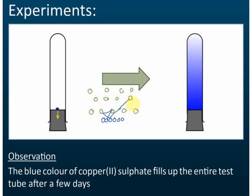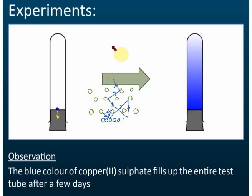Random means it cannot be predicted — the directions of the motion cannot be predicted. The particles move randomly: going up, bouncing back, hitting other particles and going back up. Due to these random motions of all the copper sulfate particles, the blue copper sulfate moves up through the gel.